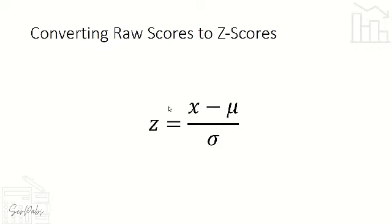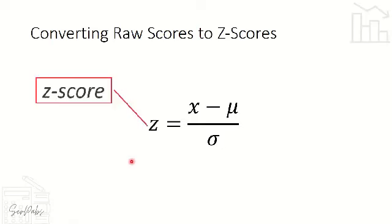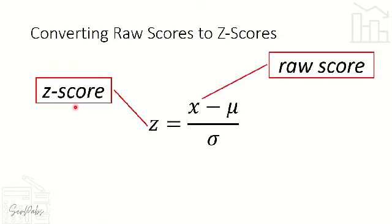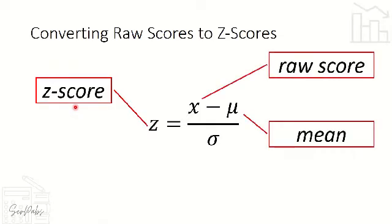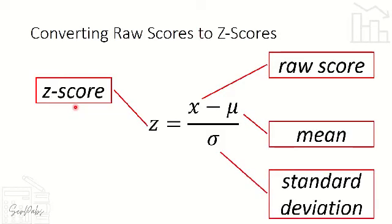In converting raw scores to Z scores, we will make use of the formula: Z is equal to X — the raw score — minus mu — the mean — over the standard deviation, or sigma. So we have Z for the Z score, X for the raw score, mu for the mean, and sigma for the standard deviation.